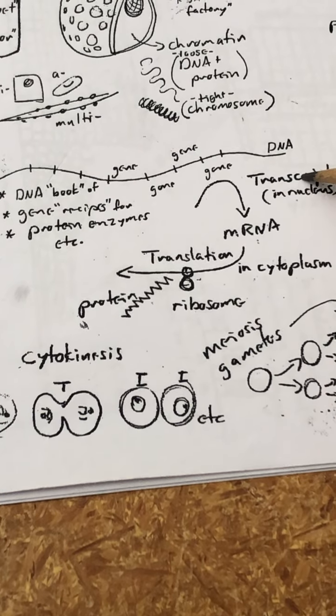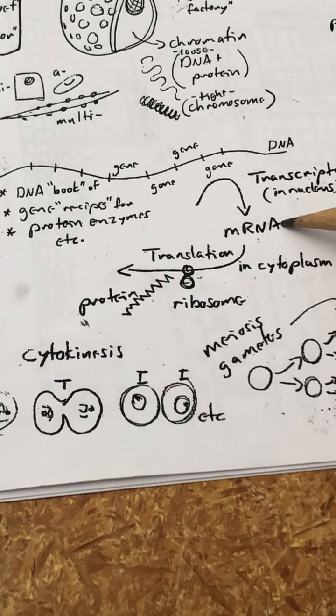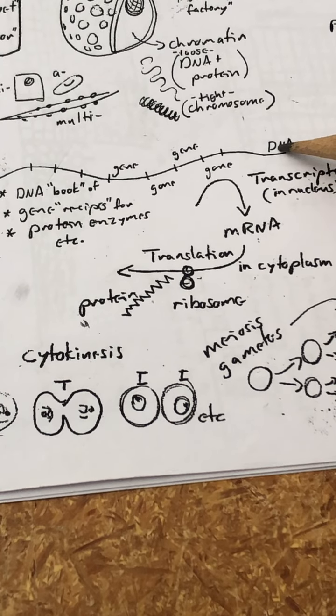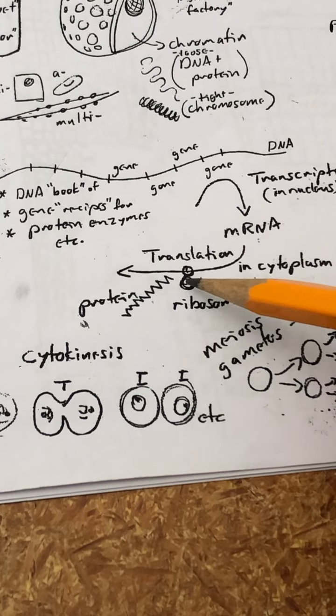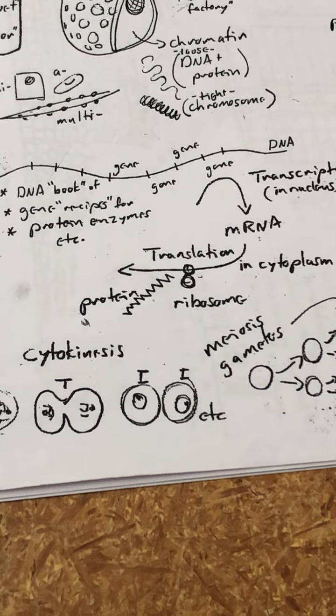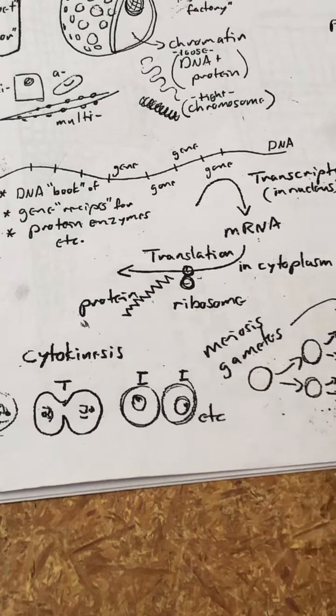In a ribosome, the mRNA can be fed between the two subunits of the ribosomes and read. This process is called translation. In translation, the information from the mRNA is used to put amino acids together in the proper sequence to create the protein that was supposed to be coded. Transcription, you make mRNA from DNA, and you're just copying the information in a different language. In translation, you're changing the chemistry completely, and you're actually creating the protein.